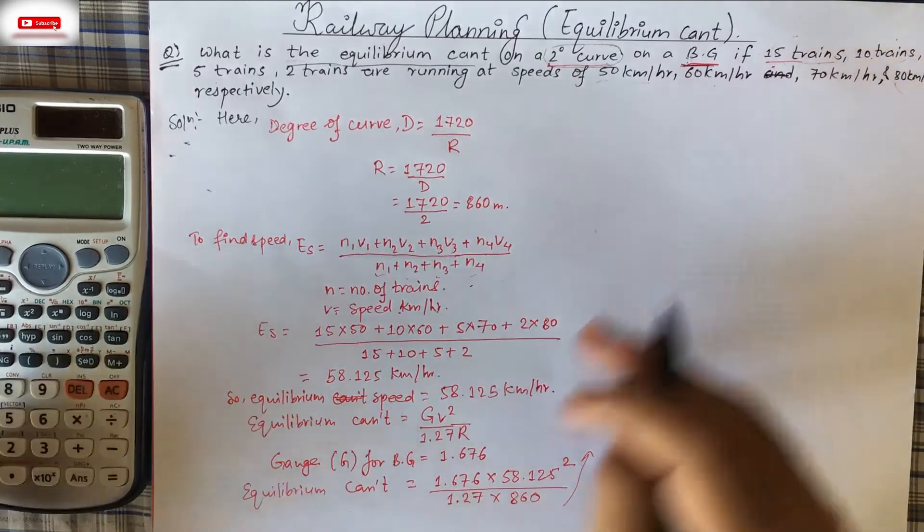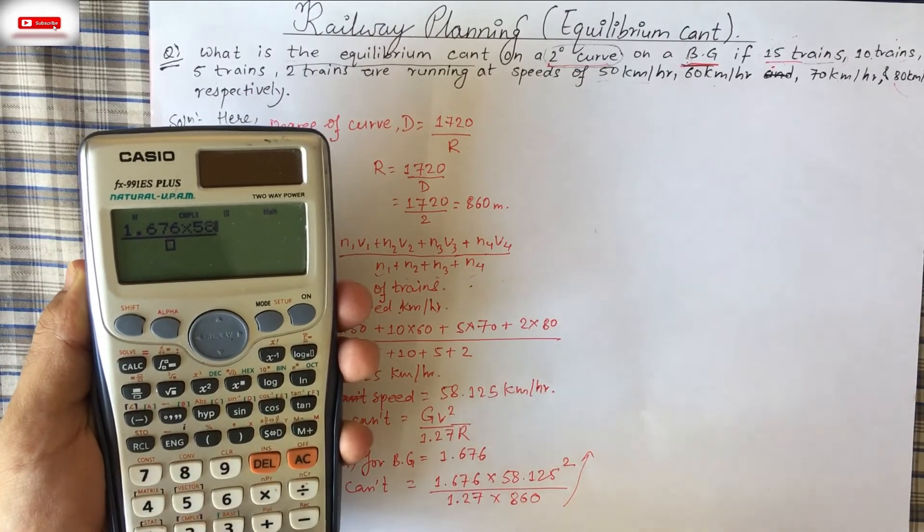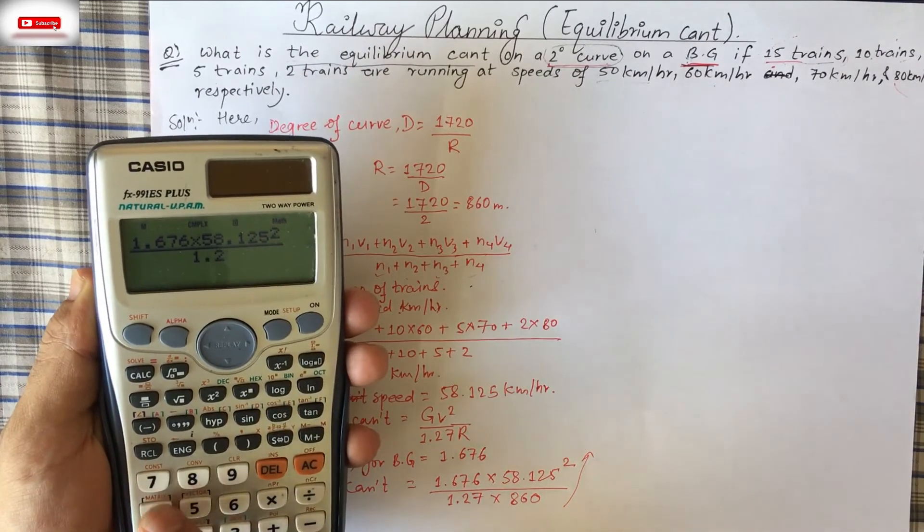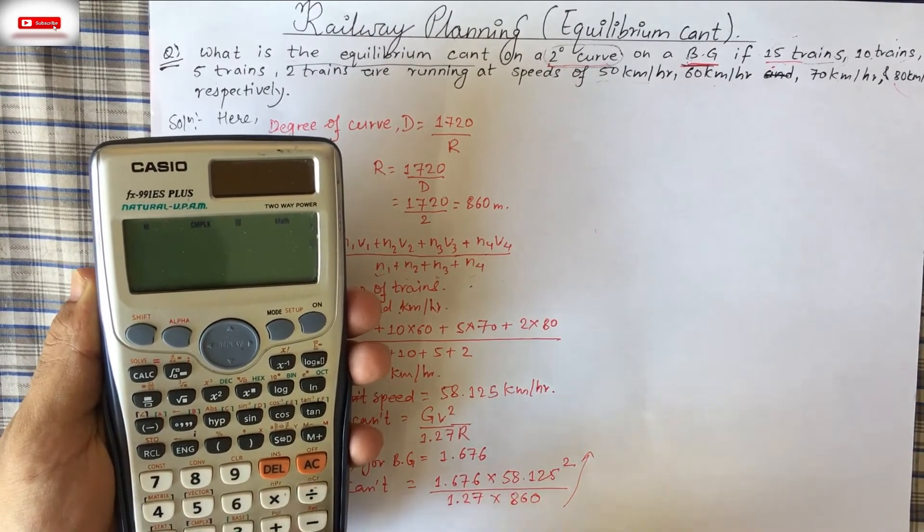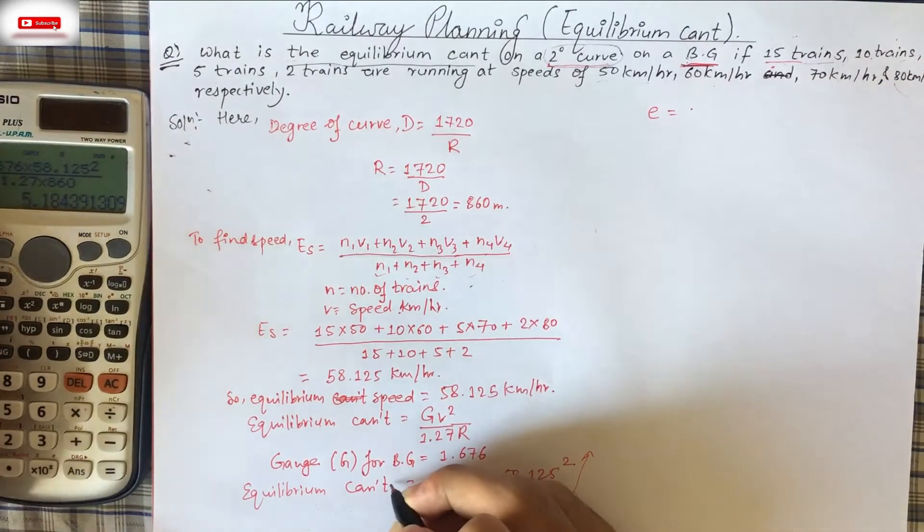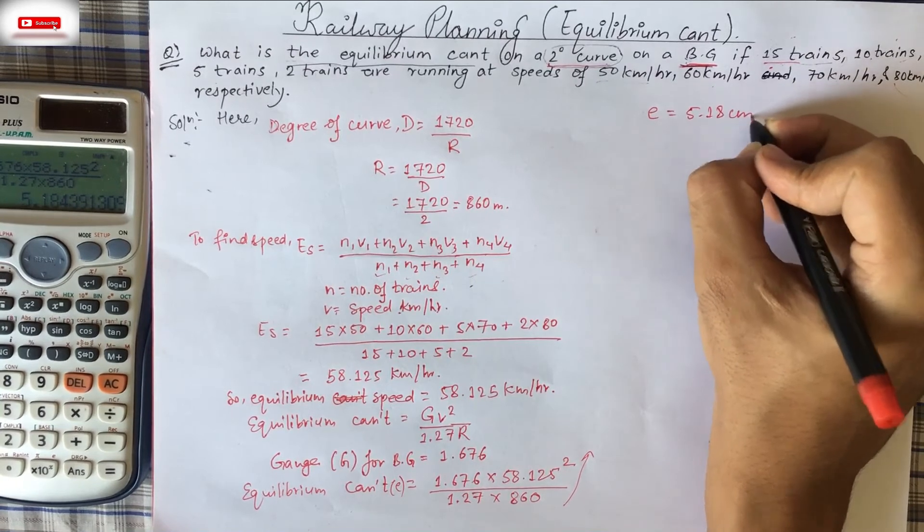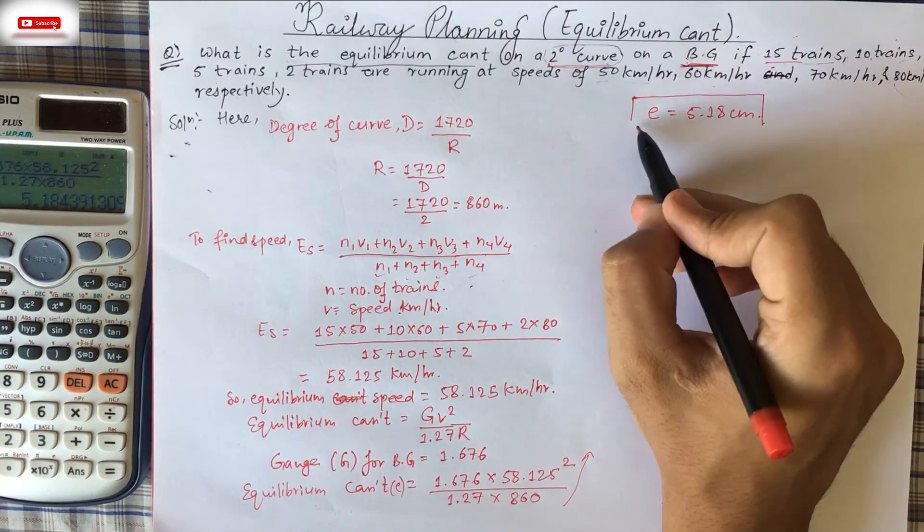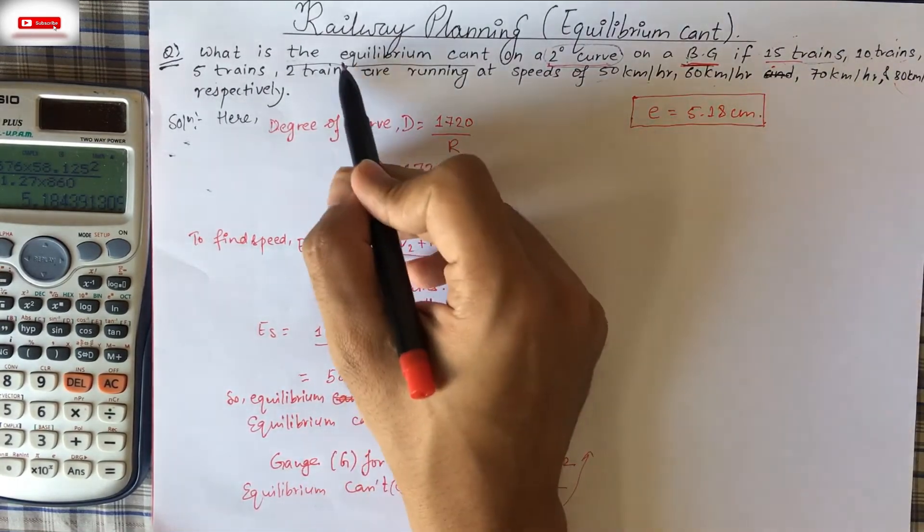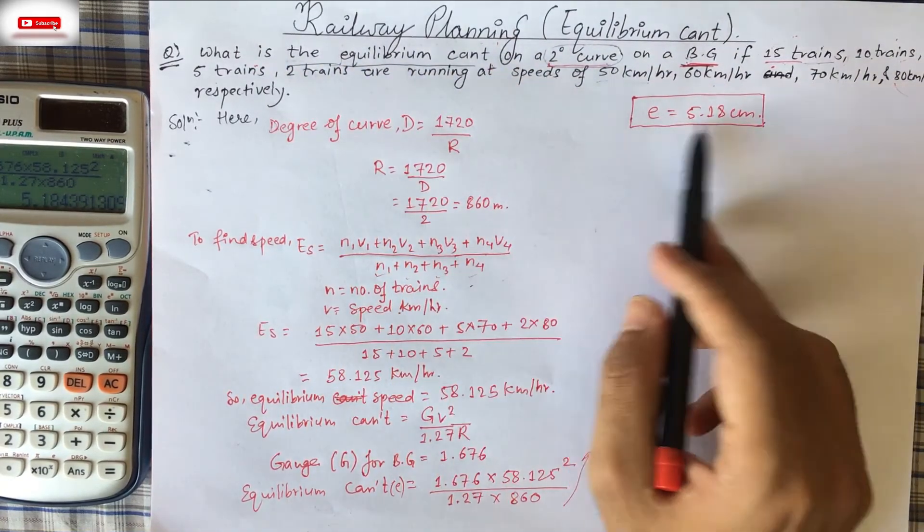Now we need to calculate it. 1.676 into 58.125 square and 1.27 into 860. 5.18. E is equal to, for equilibrium cant we can write E. So E is equal to 5.18 centimeter. This will be in centimeter. Now we have already found equilibrium cant. This is the question. What is the equilibrium cant? And we found 5.18 centimeter.